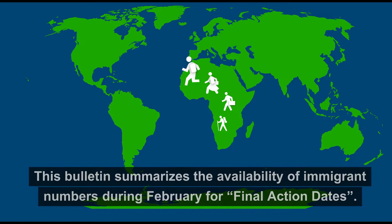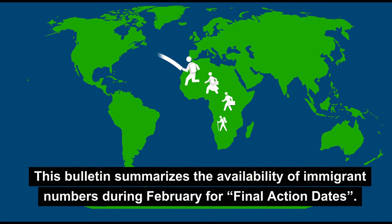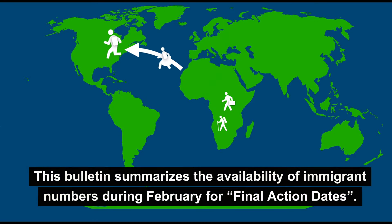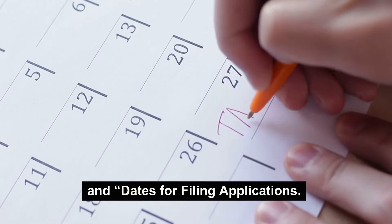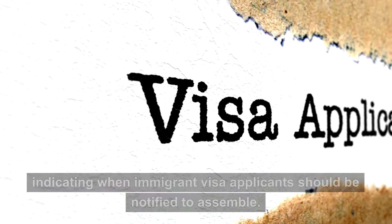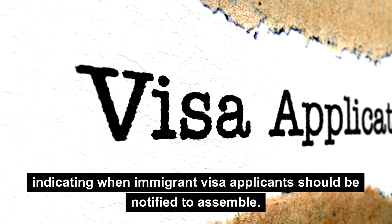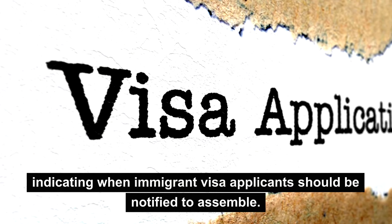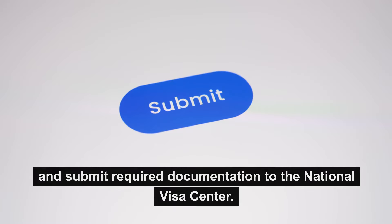In today's video, we are going to talk about the Visa Bulletin for February 2024. This bulletin summarizes the availability of immigrant numbers during February for final action dates and dates for filing applications, indicating when immigrant visa applicants should be notified to assemble and submit required documentation to the National Visa Center.